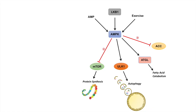Another thing AMPK does is it actually inhibits ACC — acetyl-CoA carboxylase — which is indispensable for fatty acid synthesis. So when AMPK inhibits ACC, it inhibits fatty acid synthesis. So you can see where this is going: AMPK activates fatty acid catabolism and oxidation while suppressing fatty acid synthesis.